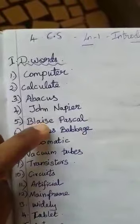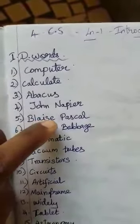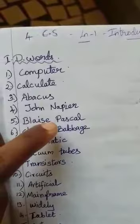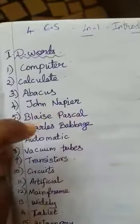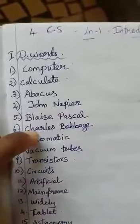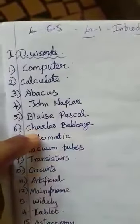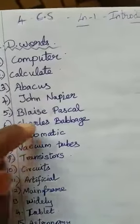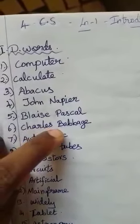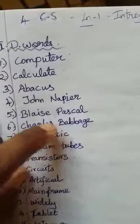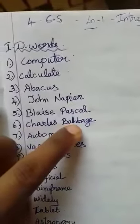B-L-A-I-S-E. Blaise Pascal. P-A-S-C-A-L. Blaise Pascal. Sixth one: Charles Babbage. C-H-A-R-L-E-S. Charles. B-A-B-B-A-G-E. Babbage. Charles Babbage.